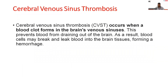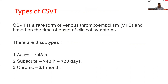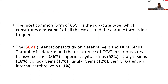Cerebral venous sinus thrombosis occurs when a blood clot forms in the brain's venous sinuses, preventing blood from draining out of the brain. As a result, blood cells may break and leak blood into the brain tissues, forming a hemorrhage. CSVT is a rare form of venous thromboembolism. Based on the time of onset of clinical symptoms, it can be divided into three subtypes: acute (within 48 hours), sub-acute (greater than 48 hours to within 30 days), and chronic (greater than one month). The most common form is the sub-acute type, constituting almost half of cases.